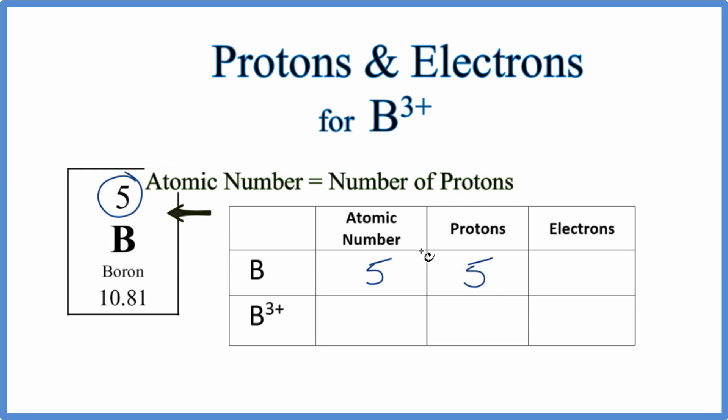When we look at atoms and ions, the atomic number is going to be the same for boron or the boron ion, and that's what makes boron boron. It has five protons. The thing that will be different though between the ion and the atom is the electrons.